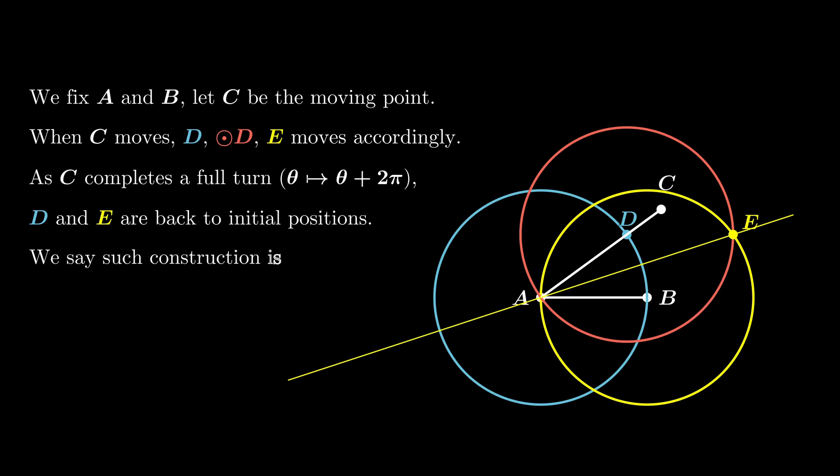In this case, we say that this construction is one periodic, where the number 1 refers to the number of turns in round angles.